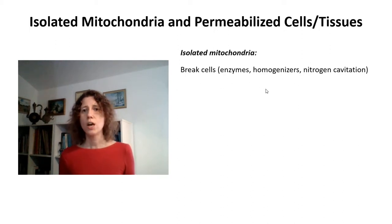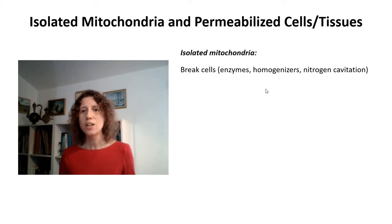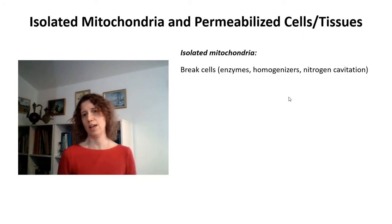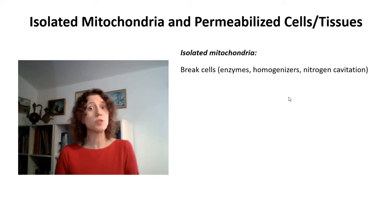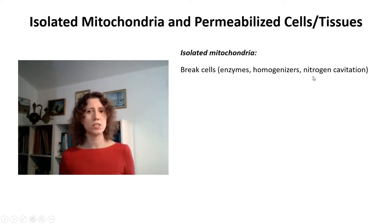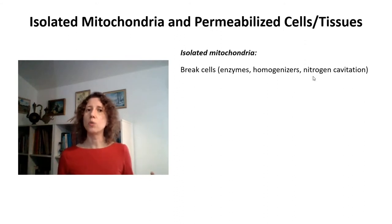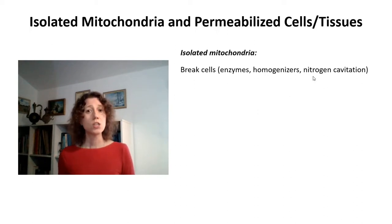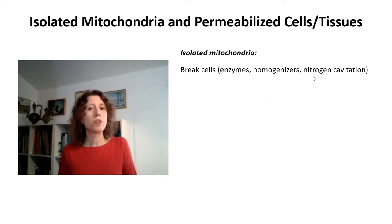There are all sorts of different homogenizers. Some are simply mechanical homogenizers, pretty similar to a food processor but much smaller in scale. There are also homogenizers that use distances between the homogenizer and a glass vessel — for example, Teflon or glass homogenizers. Another interesting way to break down cells is nitrogen cavitation, which breaks the cell from the inside out, permeabilizing the cell only once and therefore conserving mitochondrial function much better.